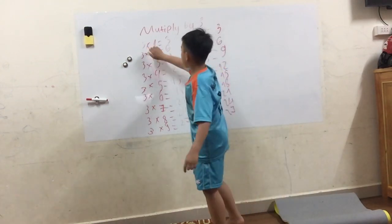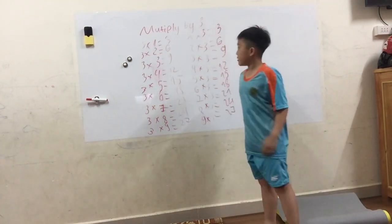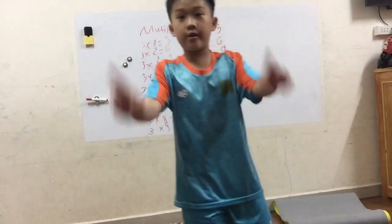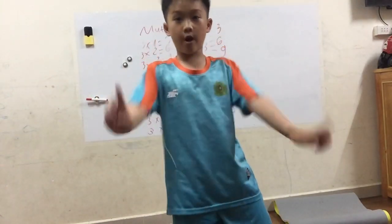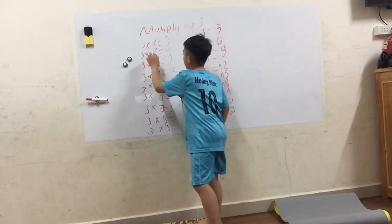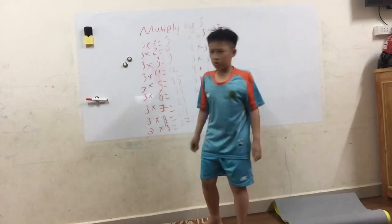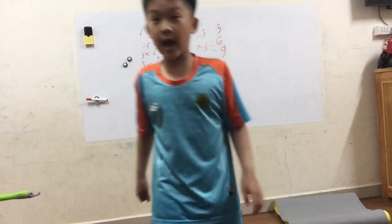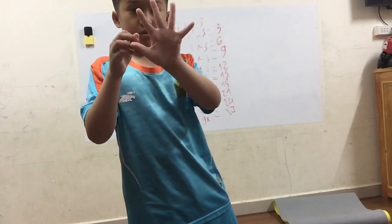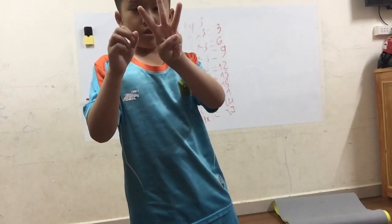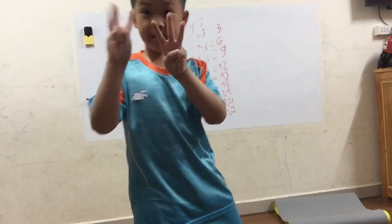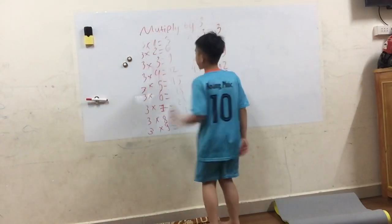Here are the last problems. Three multiplied by one — six is only going to multiply by one, so it's equal to three. So, three multiplied by two. Here it's double up: three, four, five, and six. So the answer is six.